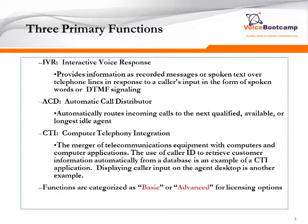ACD, on the other hand, is Automatic Call Distribution, which provides automatic routing of incoming calls to the next qualified agent. CTI, on the other hand, allows a call center to integrate with business applications to provide further call processing.